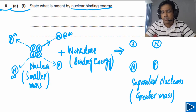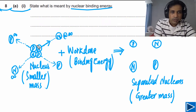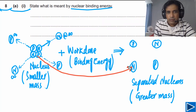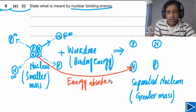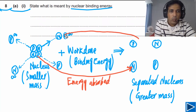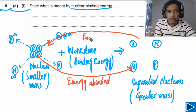Let's understand this a different way. If you go from nucleus to individual nucleons, you have to do work, so energy will be absorbed. But if you take individual nucleons and combine them into one nucleus — as in fusion — energy will be released.